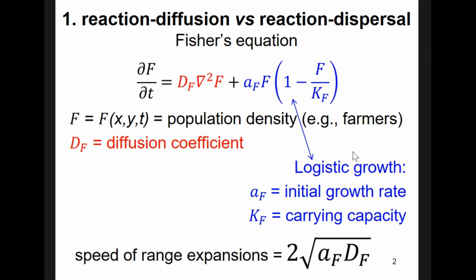Almost all quantitative models of human spread are based on Fisher's equation. Fisher's equation describes the population change per unit time. Here I use F for farmers, but it need not be farmers. In fact, Fisher's equation has been applied many times to the out-of-Africa expansion.